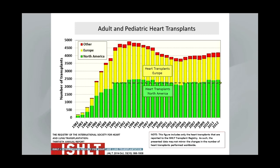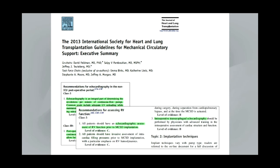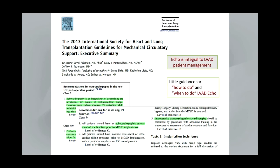Data from the ISHLT registry of adult and pediatric heart transplant patients shows that the annual rates of heart transplantation have been stagnant for the last 25 years due to the limited donor pool. Yet over the last few years only, we're up to over 3,000 LVAD implants annually in North America. For perspective, this seems like a big number, but there are currently in excess of 500,000 patients living with advanced heart failure in the U.S. alone.